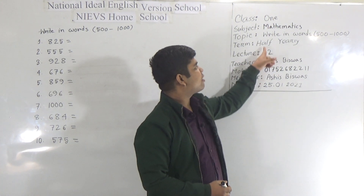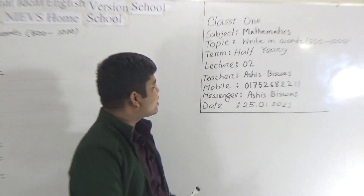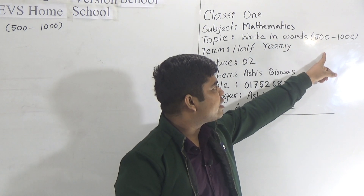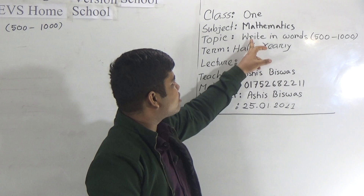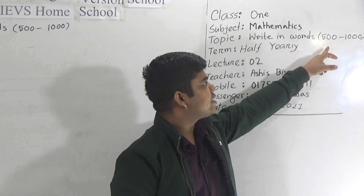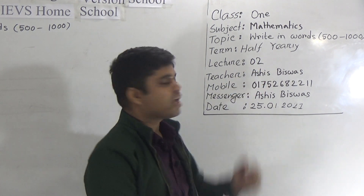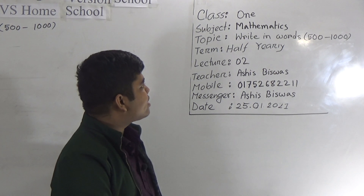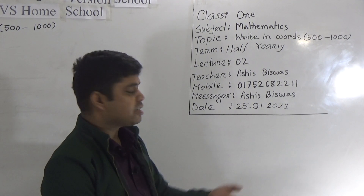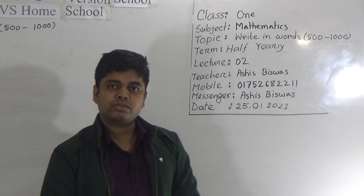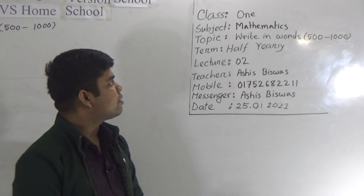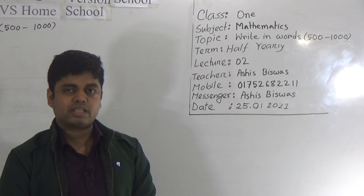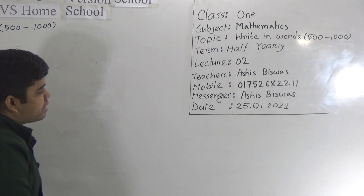Today is our lesson number 2 of our ARD exam. Our today's topic is: Write in words 500 to 1000. In lecture 1, we have already learnt Write in words — basic discussion. That means I wrote some numbers and asked you to memorize the spelling of those numbers.